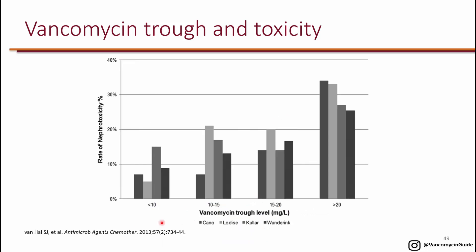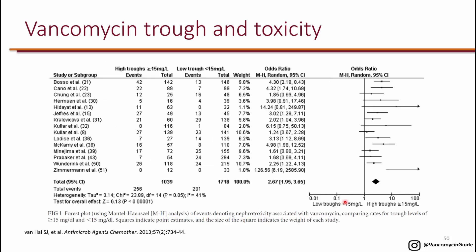This is a systematic review and meta-analysis from multiple studies looking at the same groups: trough less than 10, 10 to 15, 15 to 20, and greater than 20. Specifically, they compared trough of 15 or higher versus anything less than 15. All the different studies were added to this meta-analysis, and the sum shows a significant increase in odds of nephrotoxicity with trough greater than or equal to 15 compared to trough less than 15. More and more evidence suggests that a trough of 15 or higher is actually nephrotoxic.